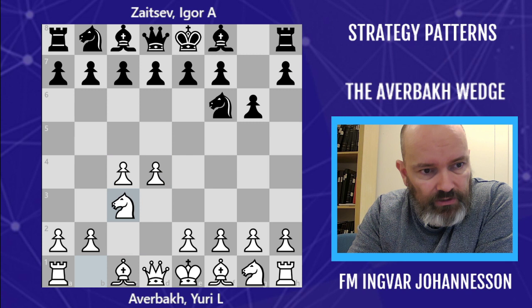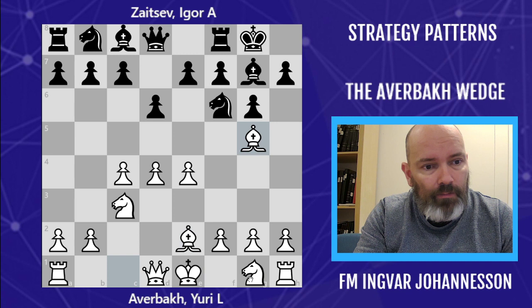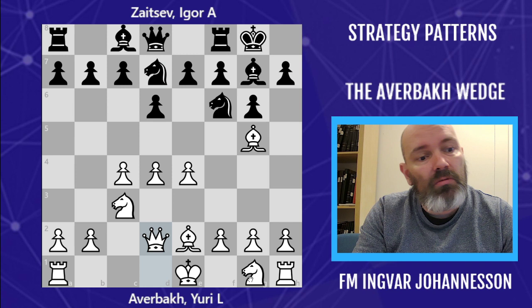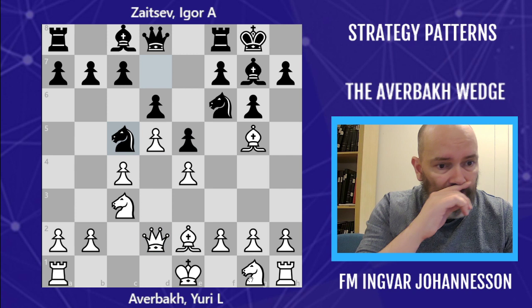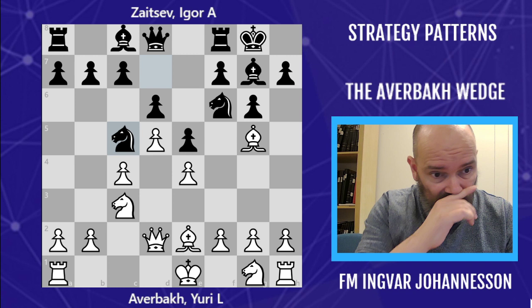Averbach has a variation named after him in the King's Indian. It goes: e4 d6, bishop to e2, postponing the development of the knight on g1, then playing bishop to g5. If Black plays in a normal King's Indian way — e5, d5, knight c5 — White can get a pretty quick attack.